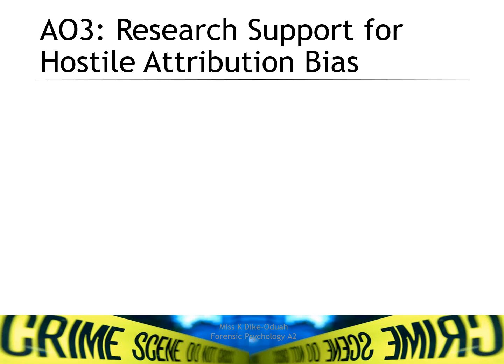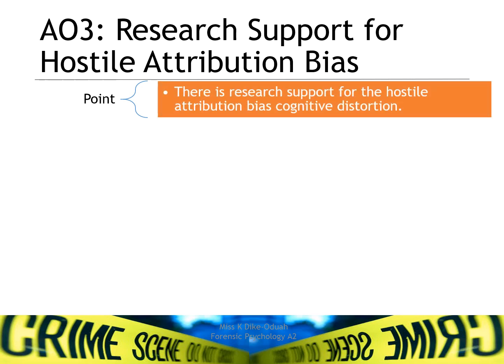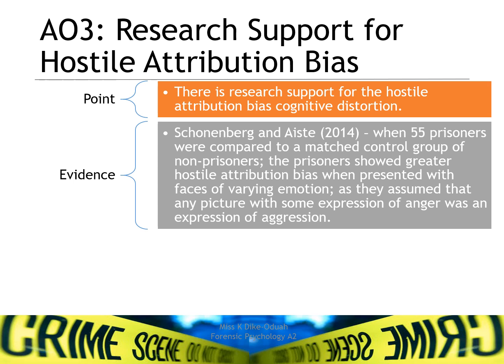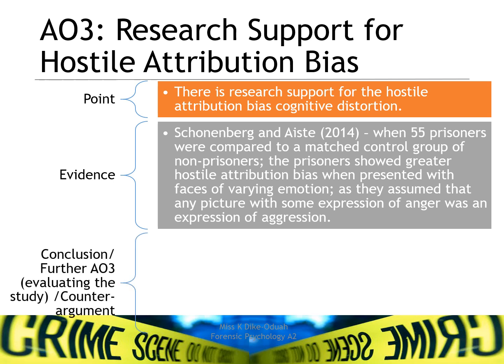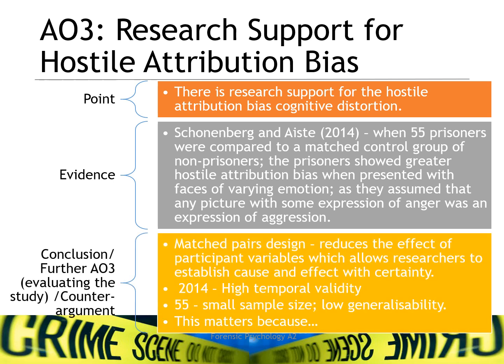Now for some AO3 points, using a point-evidence-explain-however format. There is research support for hostile attribution bias as a cognitive distortion. Schoenberg and Ice conducted a study in 2014 where 55 prisoners were compared to a matched control group of non-prisoners. The prisoners showed greater hostile attribution bias when presented with faces of varying emotion, assuming that any picture with some expression of anger was an expression of aggression. Using a matched pairs design reduces the effect of participant variables, and 2014 gives the study high temporal validity.